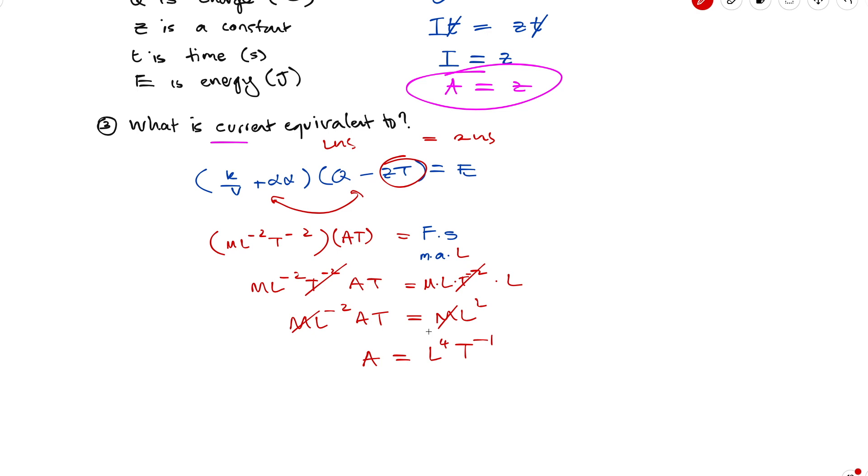So these are the dimensions of a, which is current. And therefore, even though the dimensions of current are just a, the foundational dimension, that is equivalent to the dimensions L to the power of four per time. Now, again, that is not actually true. Current is not actually equivalent to this. This is just what the formula is saying. But remember, I've made this formula up. So what that also means is that L to the power of four, T to the negative one, is equivalent to the dimensions of z as well, because z is equal to the dimensions of a.